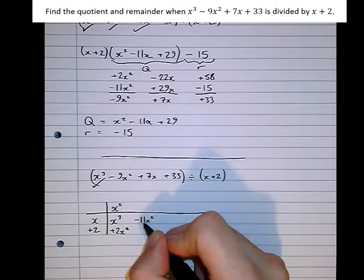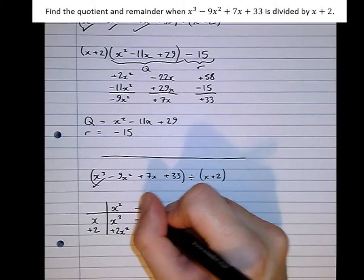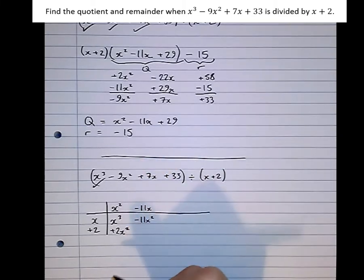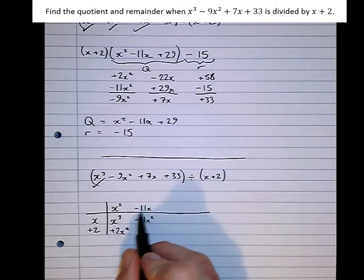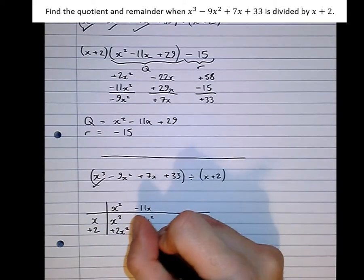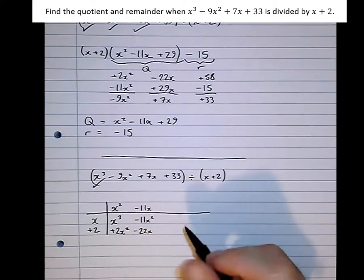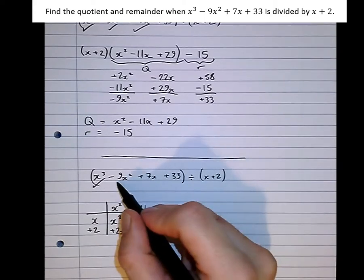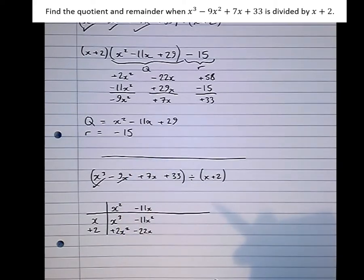What would have to go there to allow this multiplication to be possible? Take 11x. Okay, so that allows us to do another sum here. Because 2 times minus 11x is minus 22x. We've got the 9x squared now that we need. We'll tick that off.